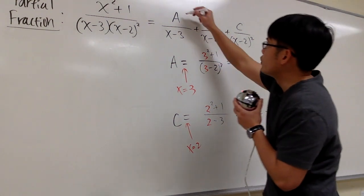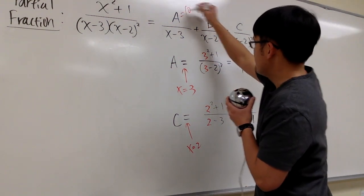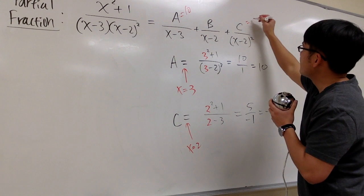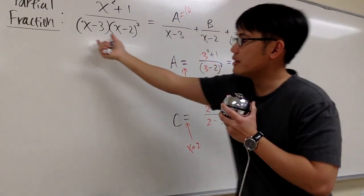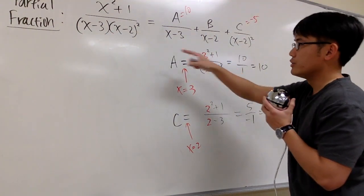And you'll see how we knock down two numbers right away. A is 10 and C is equal to negative 5. To get A and C, once again, because the denominators are exactly the same from the original.